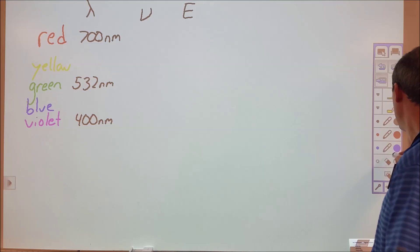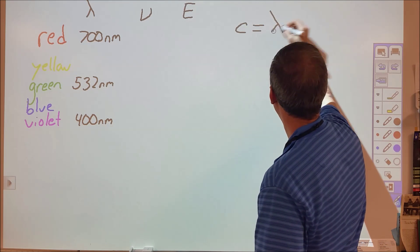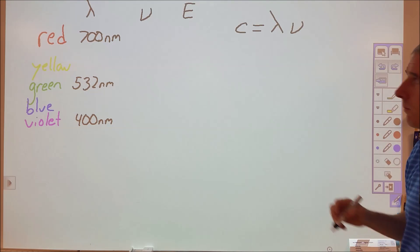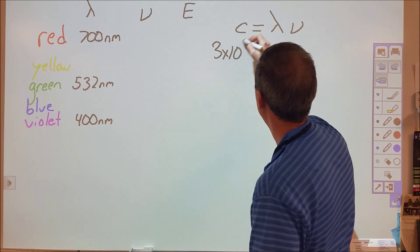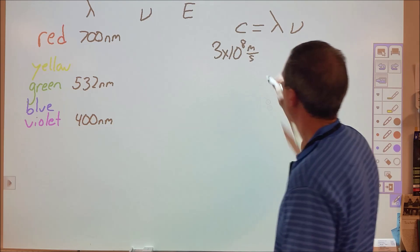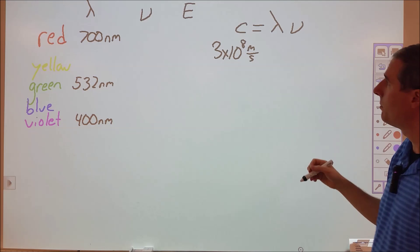There are two equations that govern these things. The first is that the speed of light is equivalent to the wavelength of your light times its frequency. C is the speed of light. Speed of light is constant, doesn't change no matter what, ever. It's always traveling at the same speed, 300 million meters per second.